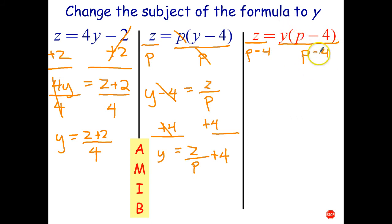And that leaves just a y on the left and z over p minus 4 on the right.